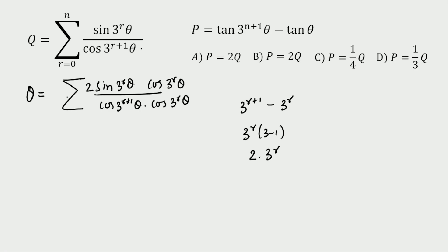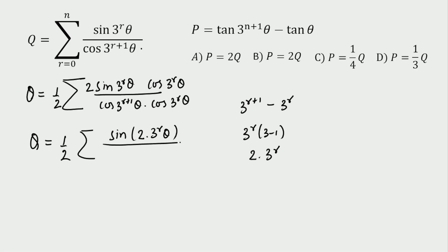Now multiply and divide by 2. Using the identity 2·sin θ·cos θ = sin(2θ), we can write q as: q = ½ · Σ sin(2·3^r · θ) / [cos(3^(r+1) · θ) · cos(3^r · θ)].